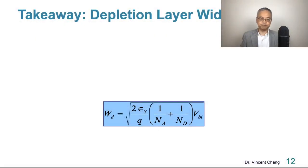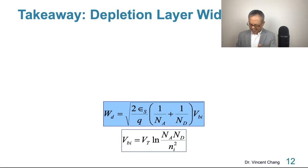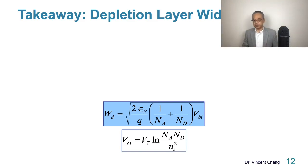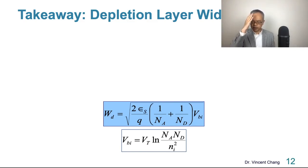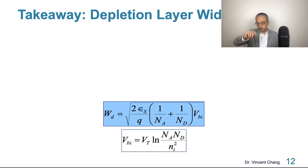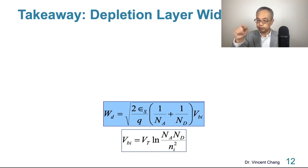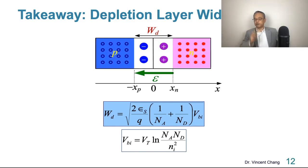Here's the takeaway: once you have the doping concentration and the p-n junction is formed, you will have the built-in potential — Vt times the natural log of Na·Nd divided by ni². Then plug the built-in potential and doping concentration into the square root expression, and the depletion layer width can be solved.